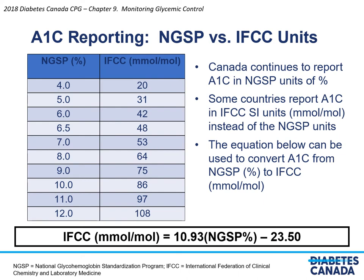Previously discussed in the 2013 clinical practice guidelines was a proposed change in A1C reporting. Currently in Canada we use NGSP, the National Glycohemoglobin Standardization Program, which means that A1C is reported in percentages. There has been some discussion about moving internationally to using IFCC units, the International Federation of Clinical Chemistry and Laboratory Medicine, which reports A1C in millimoles per mole. Currently Canada is continuing to report in NGSP units of percentage and there is no indication that we will be switching in the near future. However, if you are interested in understanding the conversion, the calculation of IFCC from NGSP is included at the bottom of this slide.